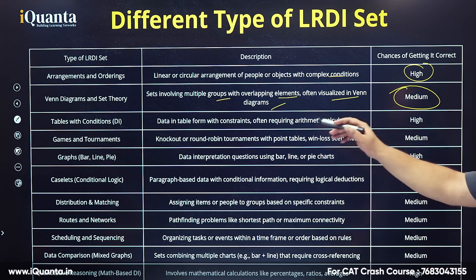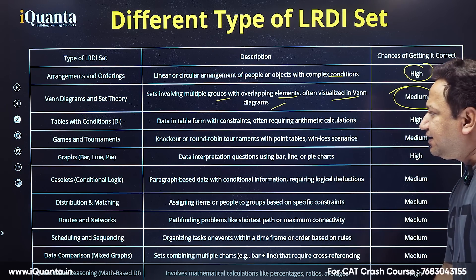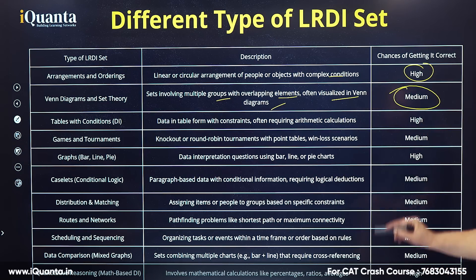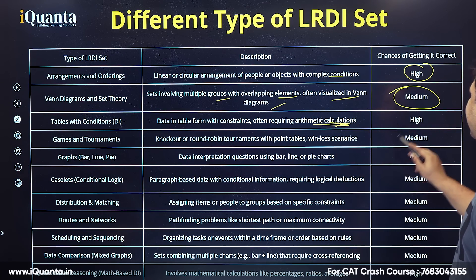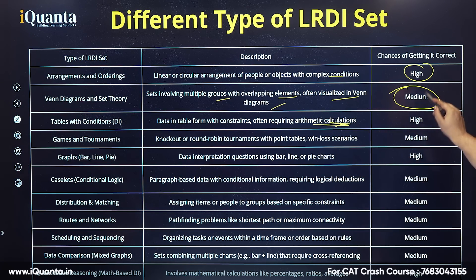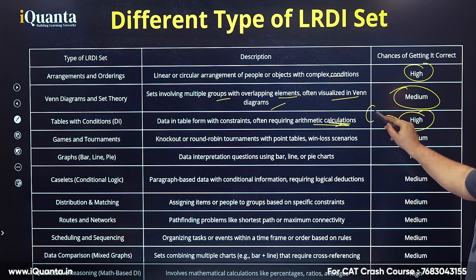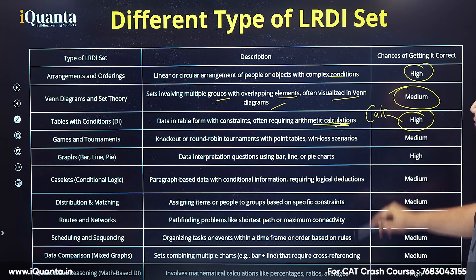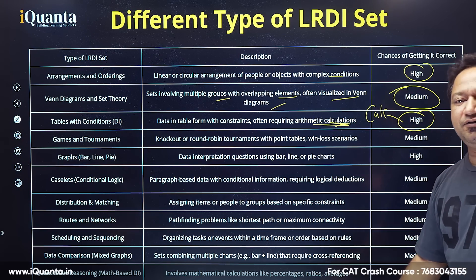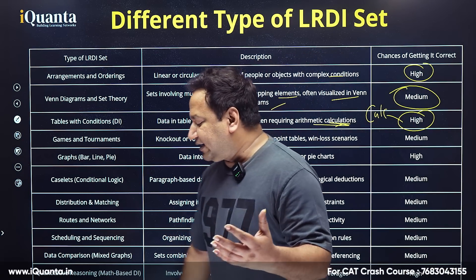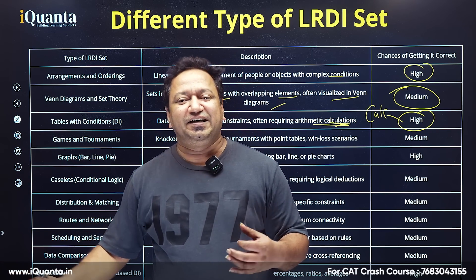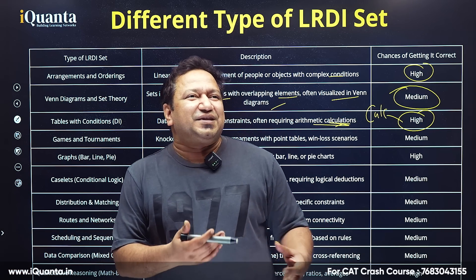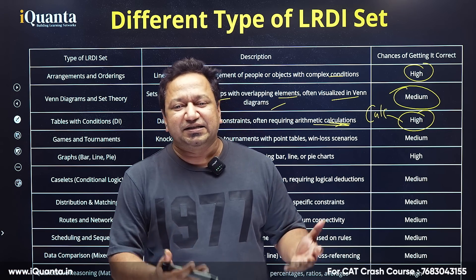Next: tables with conditions — data in table form with constraints, often requiring arithmetic calculations, which is kind of quant-based reasoning. Chances of getting it correct are very high because we have the calculator, and CAT aspirants generally put in maximum time on quants. After that: games and tournaments. In the last few years these are not very frequent, and getting them correct is medium because they sometimes mix knock-out and round-robin formats.